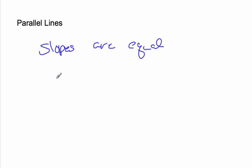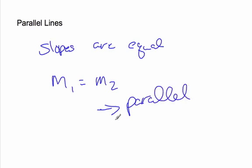For parallel lines, slopes are equal. So m1 of the first line would equal m2 of the second line. Then parallel. So we look at the slopes to see if they're parallel. If they're equal, then they're parallel. And when you've got equations, you put it in mx plus b so that you can look at the slopes. Exactly.